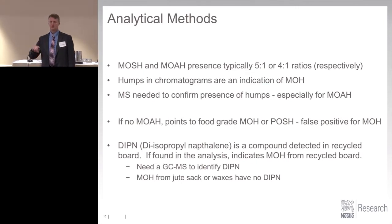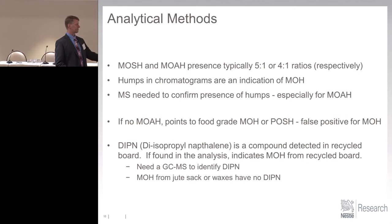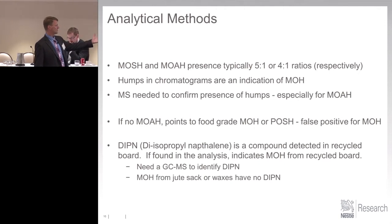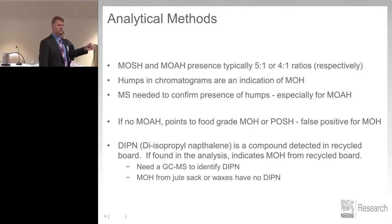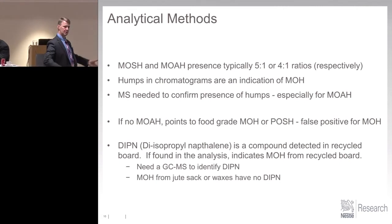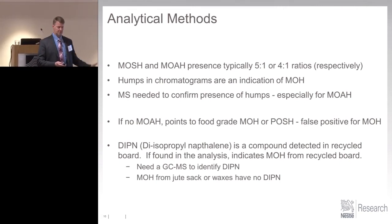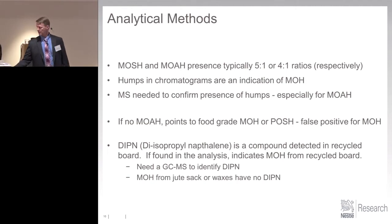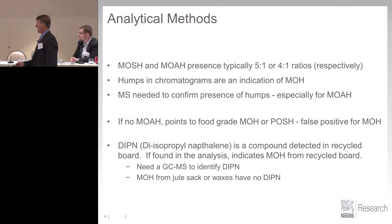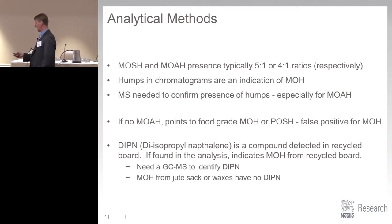This is important when you're trying to trace where the contamination is coming from. If you have virgin carton board but still have mineral oils, do you see DIPN or not? That will tell you whether it came from maybe the shipping container or the jute sack. If you don't have DIPN, it's probably the jute sack. You need a GC-MS to identify DIPN. MOH from jute sacks or waxes have no DIPN.